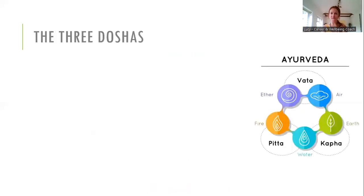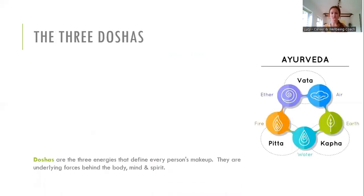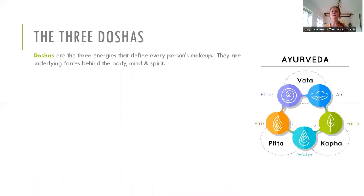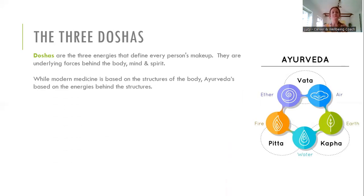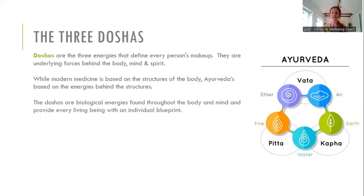These three Doshas are the three energies that define every person's makeup — they're kind of like our unique blueprint. If you think about modern medicine, it's very much based on the structure of the body, but Ayurveda is much more about the energy behind these structures, and that's why it's very different and quite unique.